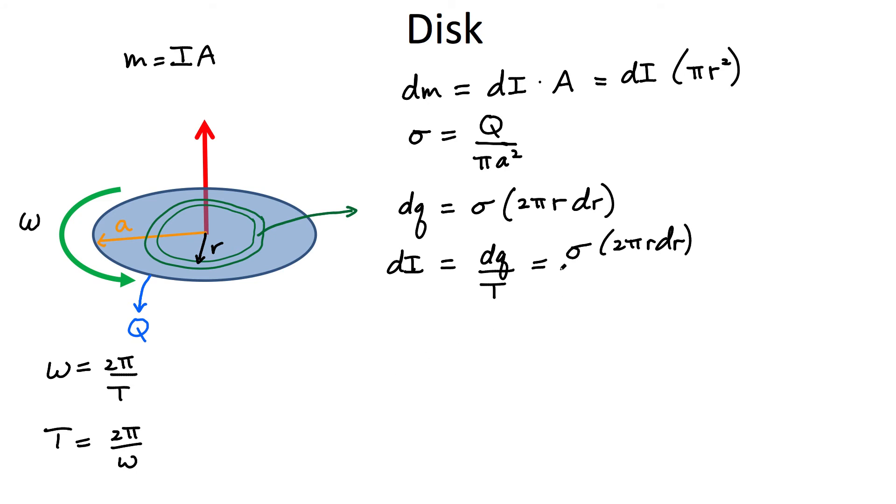So you can go ahead now and substitute that into our expression for the current produced by this ring. So we have two pi divided by omega. The two pi's cancel out. And if I rearrange that, you can bring the omega to the top, and you're going to be left with sigma, omega, and r dr. So that's the element of current produced by this ring.